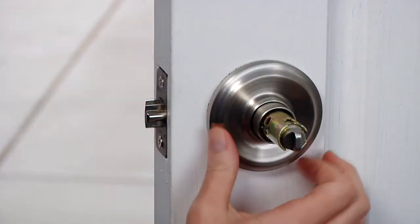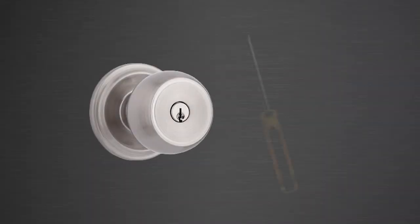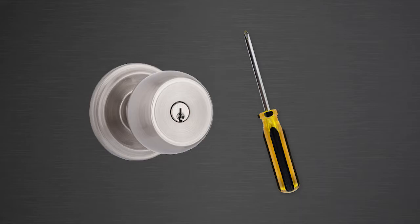Replacing an existing doorknob with a Brinks push-pull-rotate doorknob is an easy job that only requires a Phillips screwdriver and a few minutes of your time.